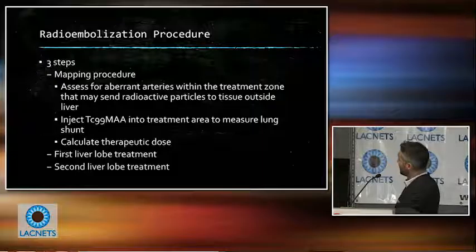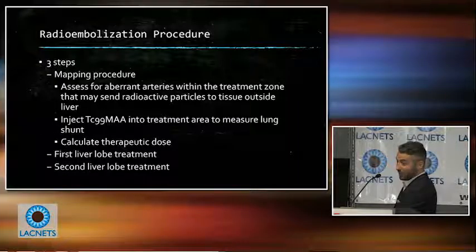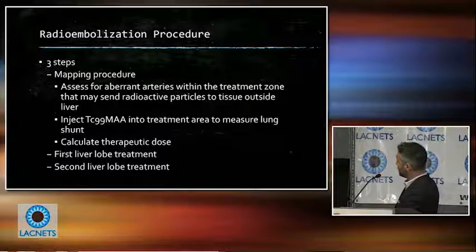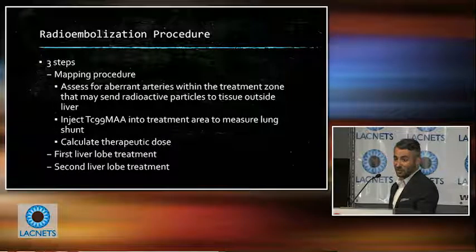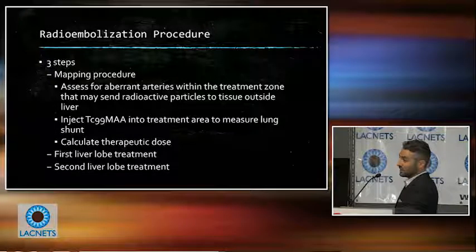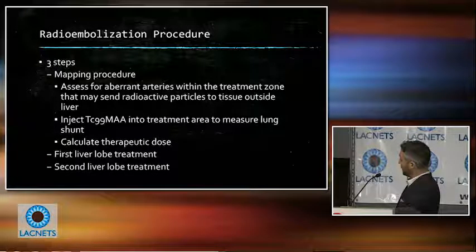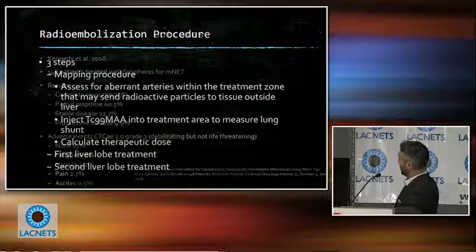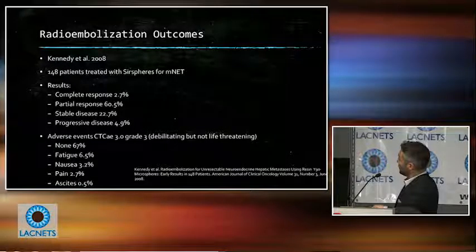The procedure involves three steps. First is a mapping procedure where we assess for aberrant arteries and ensure the radioactive material will go to the liver and not to bowel, where it can cause ulcers. We also inject a small test dose of technetium to measure shunting through the liver to the lungs — if that shunt is too high, we would send too much radiation to the lungs and risk radiation lung disease. After the mapping procedure, we calculate and order a dose. Two weeks later, we treat the first lobe of the liver, wait about a month, and then treat the second lobe.